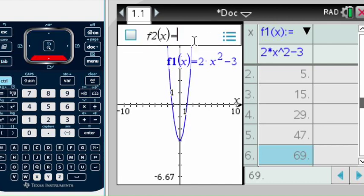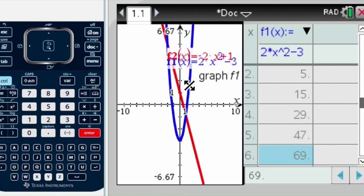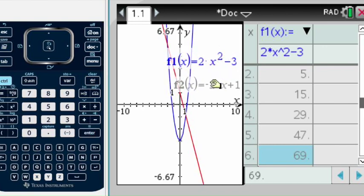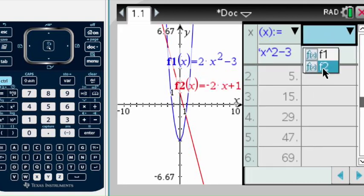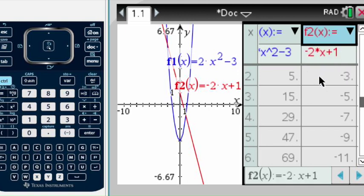Let's do negative 2x plus 1. You see how now you have two functions - your first function which was 2x to the second power minus 3, and then your second function. Why is that important for table purposes? Because if I go up here, you will be able to see both tables at the same time.